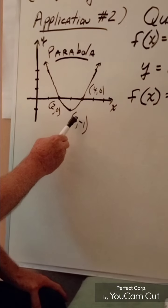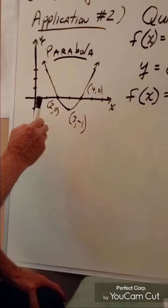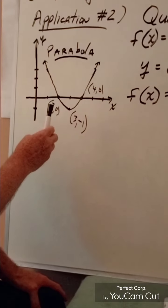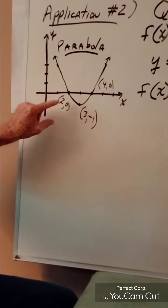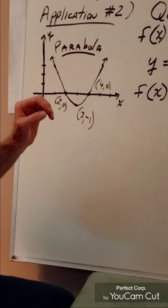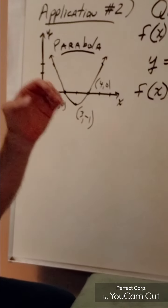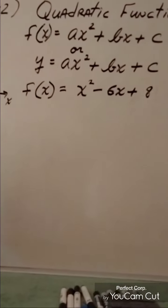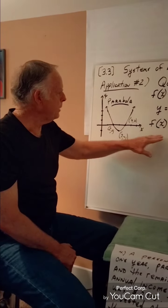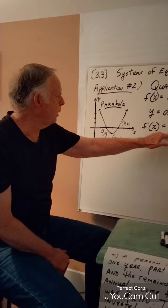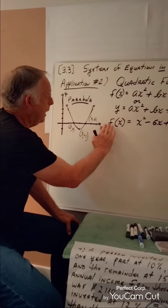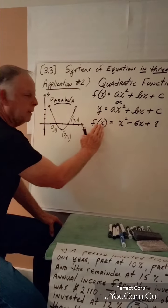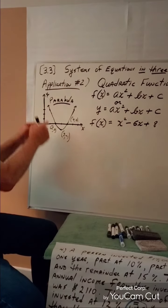If you are given any three points on the graph of a given quadratic function, we can take those three ordered pairs and substitute them into the quadratic model. We will then be able to actually identify the quadratic function exhibited by that graph.